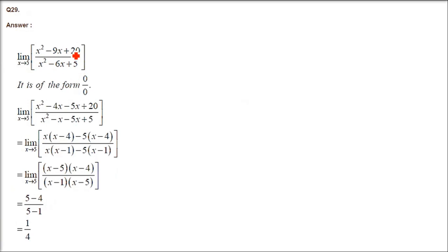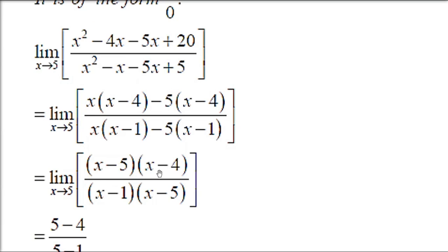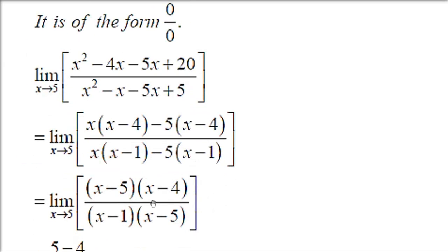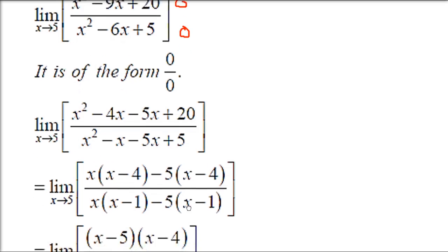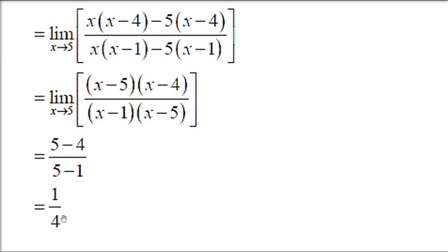Question number 29: limit of (x² - 9x + 20)/(x² - 6x + 5) as x tends to 5. Since x tends to 5, x minus 5 will be the factor. Make the factorization — ensure x minus 5 comes out in both numerator and denominator; otherwise revisit your solution.